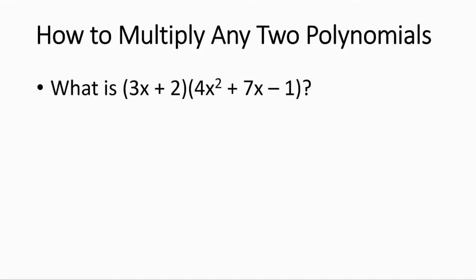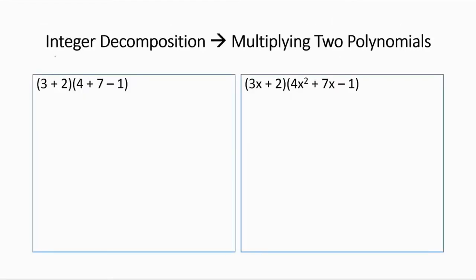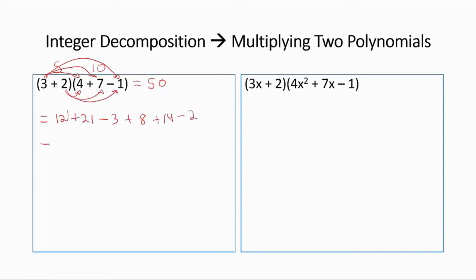How to multiply any two polynomials. What is the product of that binomial and that trinomial? Let us first consider the numeric product (3 plus 2)(4 plus 7 minus 1). We know this is 5 times 10 = 50. Distributing: 3 times 4 is 12, 3 times 7 is 21, 3 times negative 1 is negative 3; then 2 times 4 is 8, plus 14, minus 2 — and this is just 50.